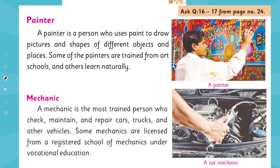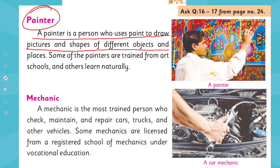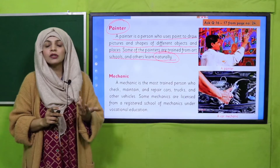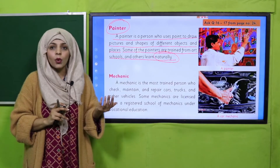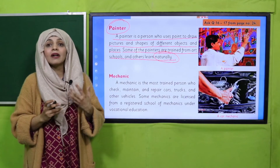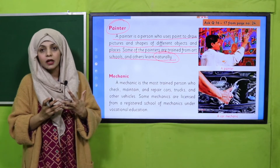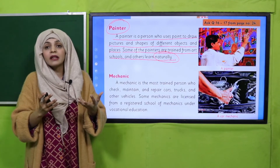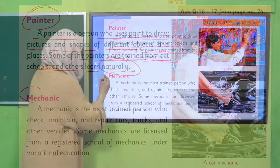Now let's move forward to the next resource: painter. 'A painter is a person who uses paint to draw pictures and shapes of different objects and places. Some of the painters are trained from art schools and others learn naturally.' Anyone who does painting, draws, and uses paints — that person is a painter. You have seen trucks that are painted, different flex boards that are painted, boards that are painted. Special training is also available in art schools. These painters also contribute in the society.